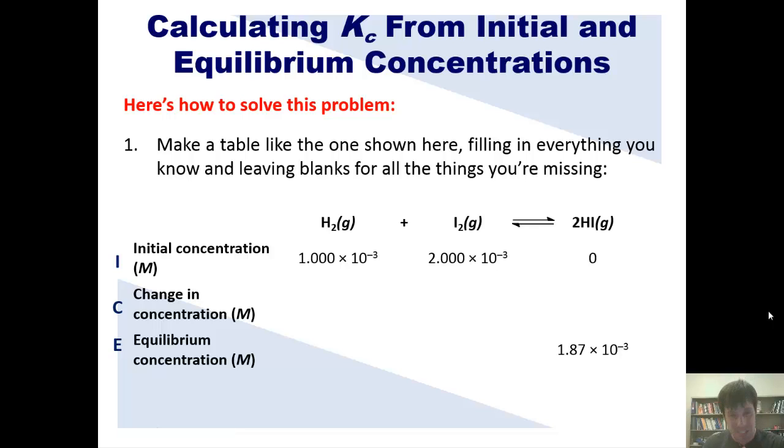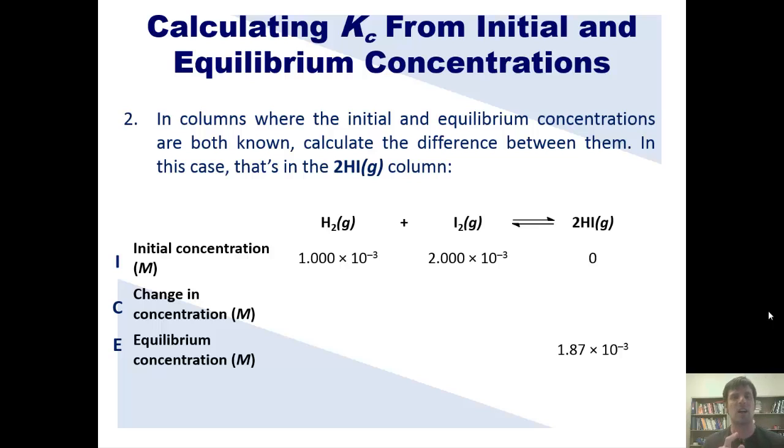Now that we have this table laid out, we'll go on to step number two, which is in columns where the initial and equilibrium concentrations are both known, calculate the difference between them. In this case, that's in this HI or hydroiodic acid column. So the initial concentration is zero. The final concentration is this number. So what's the change? Well, it's obviously this number minus zero. So it's that. Hopefully that ain't too bad.